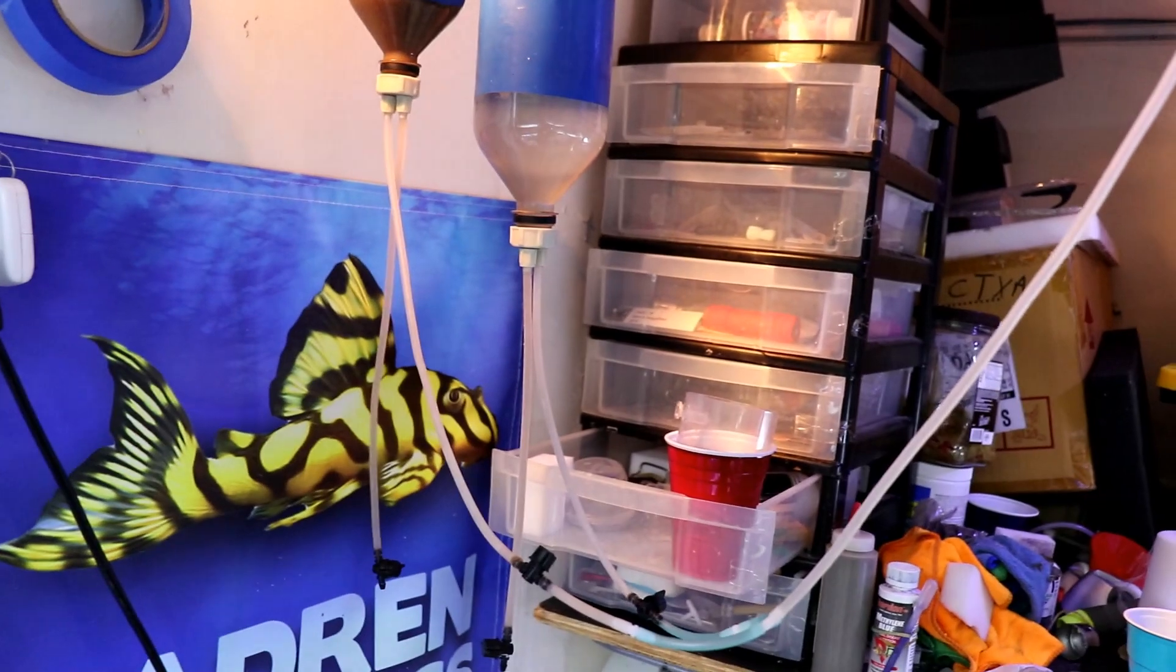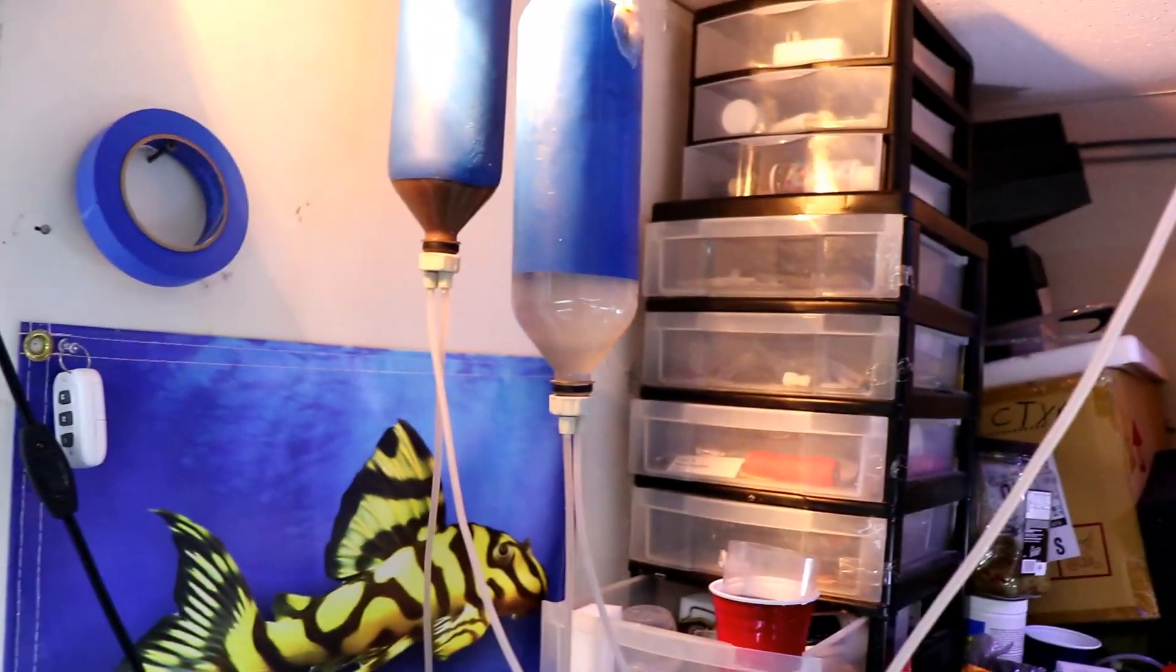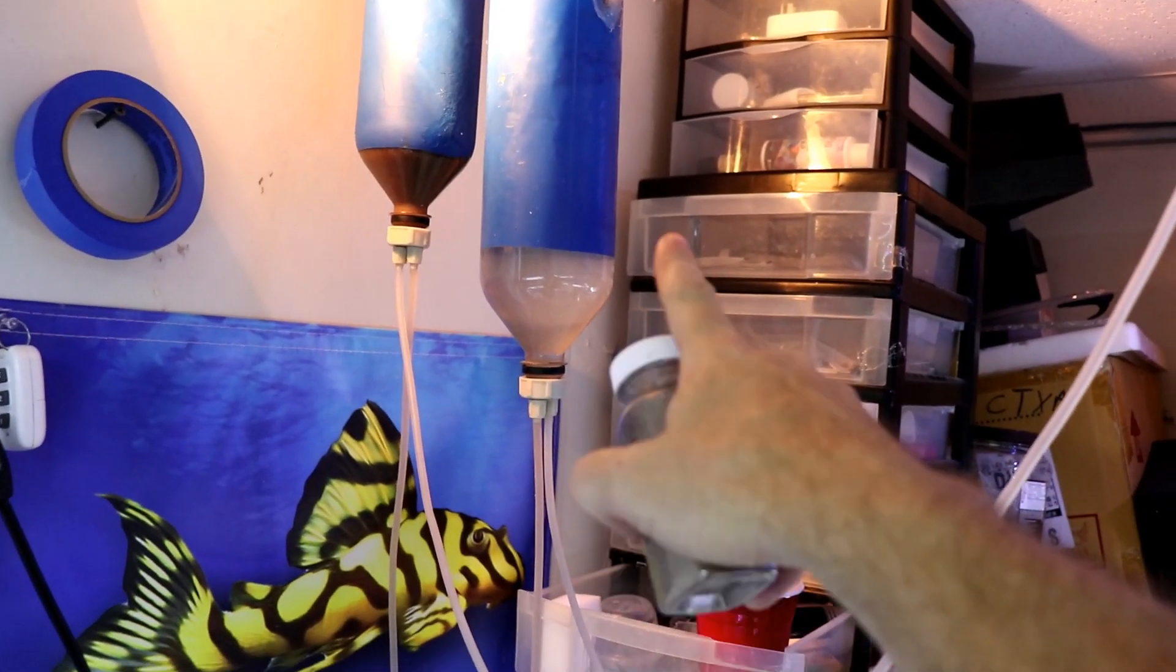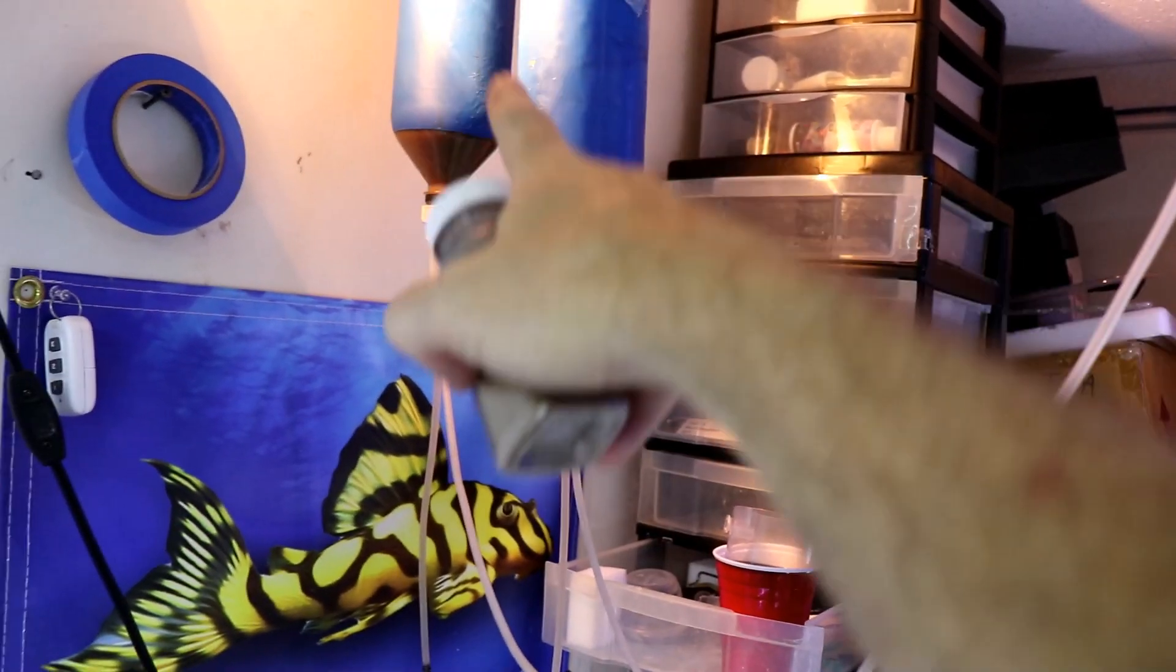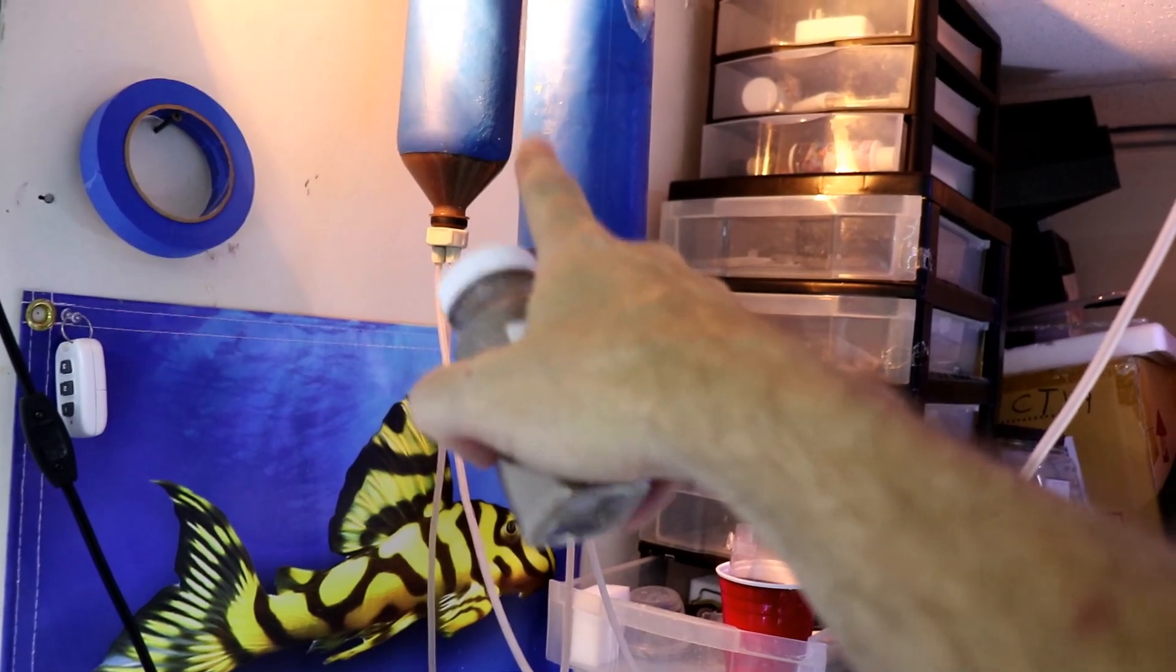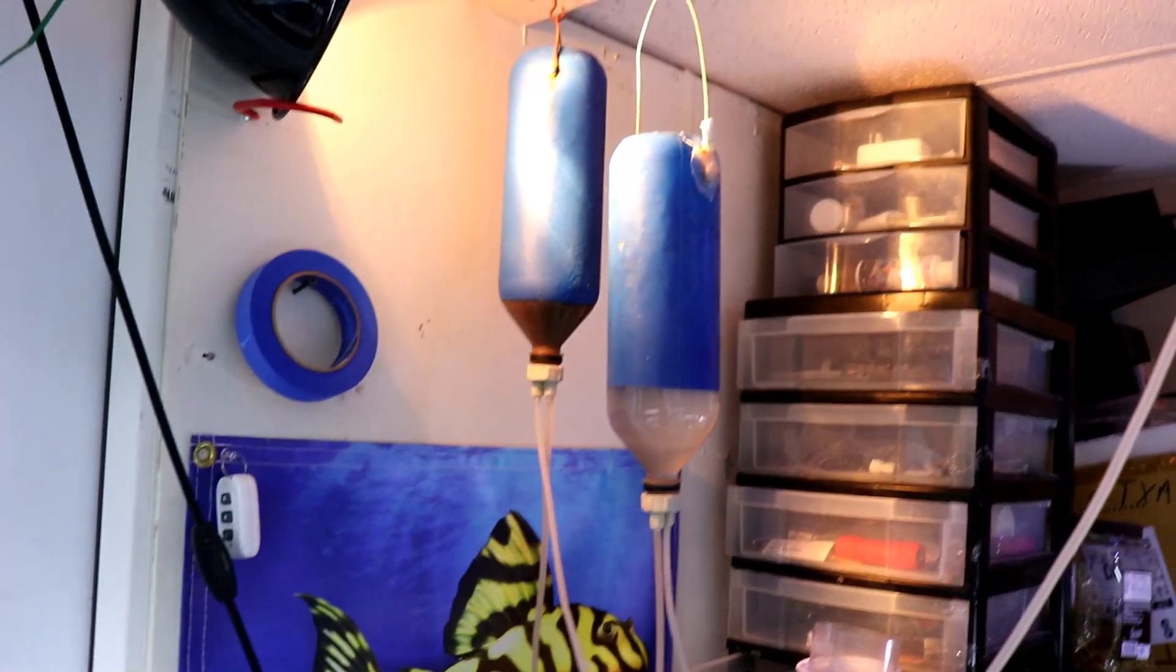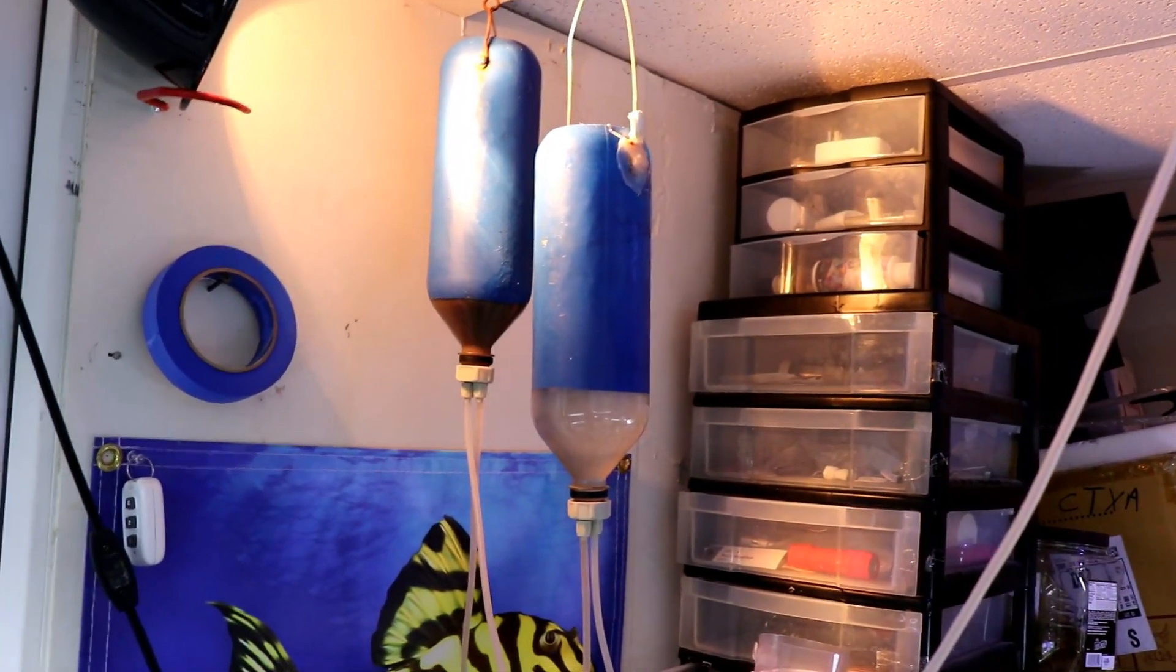Typically I'll put in about a tablespoon and a half of these. I'll put it into this first one, and then the other one I will leave empty until tomorrow. And then when I'm emptying this one, pulling the brine shrimp out tomorrow, I'll then put the eggs in that one and that way that one will be ready in 24 hours.